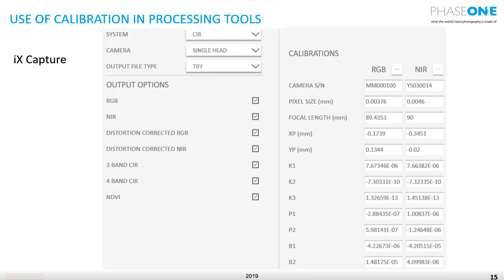Regarding the use of calibration inside IX Capture: you need the calibration if using IX Capture for distortion-corrected images. You can use distortion-corrected RGB. If you're doing RGB plus near-IR and generating 3-band, 4-band, or NDVI, use of calibration is mandatory — without it, you cannot generate the CIR combined infrared images. Once you select distortion-corrected RGB or near-IR, you can click to show IX Capture where the files are stored, import them, and verify the correct serial number — ensuring you haven't imported near-IR to RGB or vice versa.